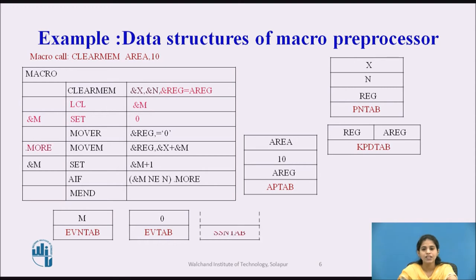Next we generate the SSN tab (sequencing symbol name table). For the given macro definition there is one sequencing symbol, and the name of that sequencing symbol is MORE. We enter that symbol name into the sequencing symbol name table.